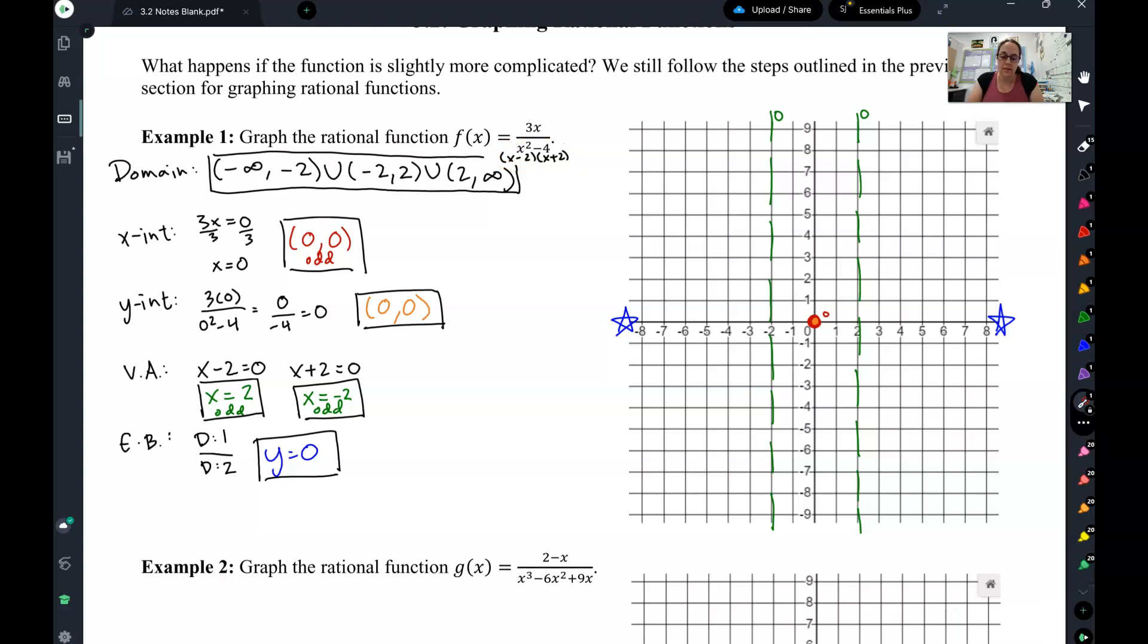And then I said the denominator cannot equal 0. So I got x cannot equal negative 2 and x cannot equal positive 2. So there's my domain.